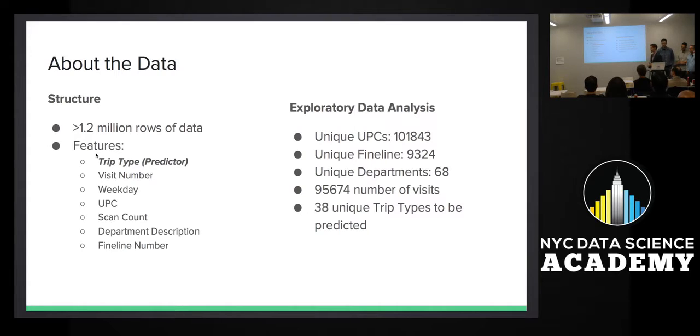The structure of the data is a pretty large data set, larger than many of us have ever worked with. There was over 1.2 million records. Each record represented an item. The features in the training data, which is about half of the 1.2 million, included a trip type, which was the classification they wanted us to predict. The only data they gave us was the visit number, which was a unique ID for each visit, the weekday that the shopper entered the store, and then for each visit there was a separate line item for each UPC that was purchased.